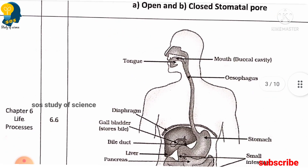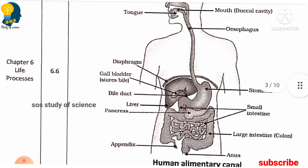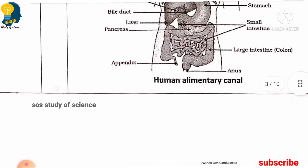You must also learn the human alimentary canal — this diagram is very important. Next, the schematic sectional view of the human heart, which is a very important diagram frequently asked in the examination. From the lesson life processes, you must learn all the parts to label.